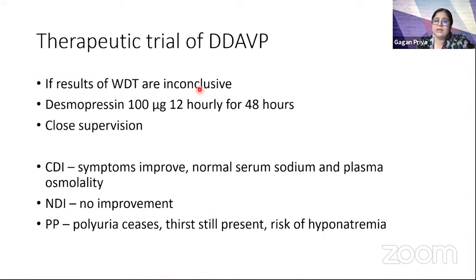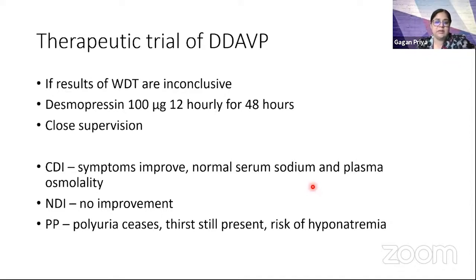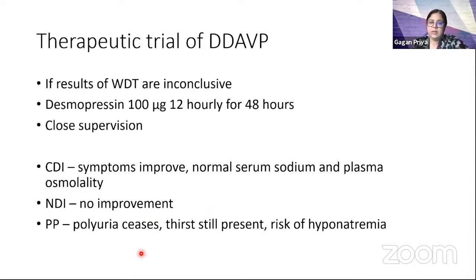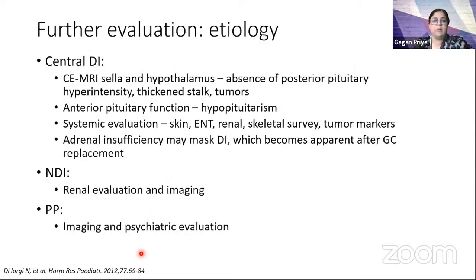Since copeptin is not available in most countries, a therapeutic trial of desmopressin is performed under very close supervision. If symptoms improve and plasma osmolality and serum sodium remain normal, it suggests central DI. Nephrogenic DI shows no improvement. In primary polydipsia, while polyuria would cease, thirst might not improve and there's a risk that sodium and plasma osmolality start falling — that is your catch for primary polydipsia.